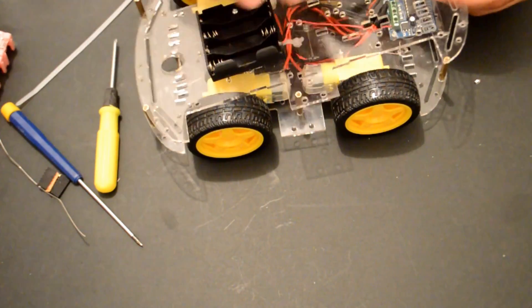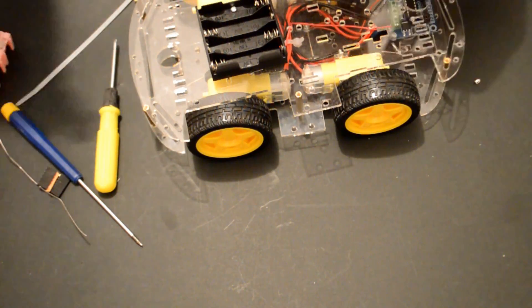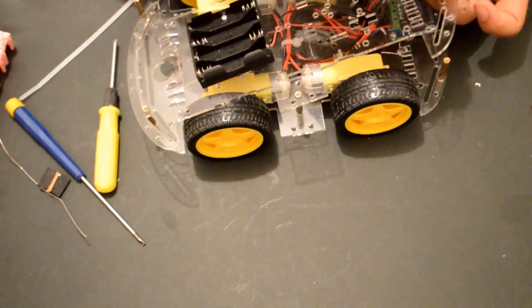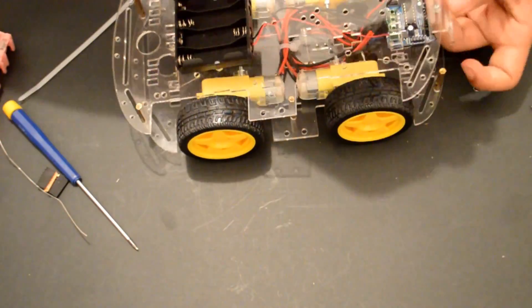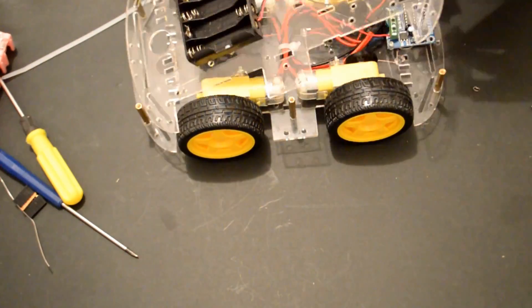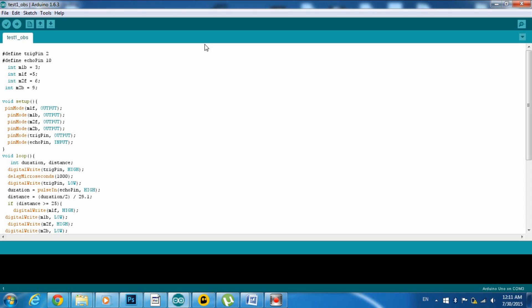Now it's time to mount the ultrasonic sensor on the chassis. So now to the code. But before I explain the code I would like to explain how does the HC-SR04 and most other ultrasonic sensors work.